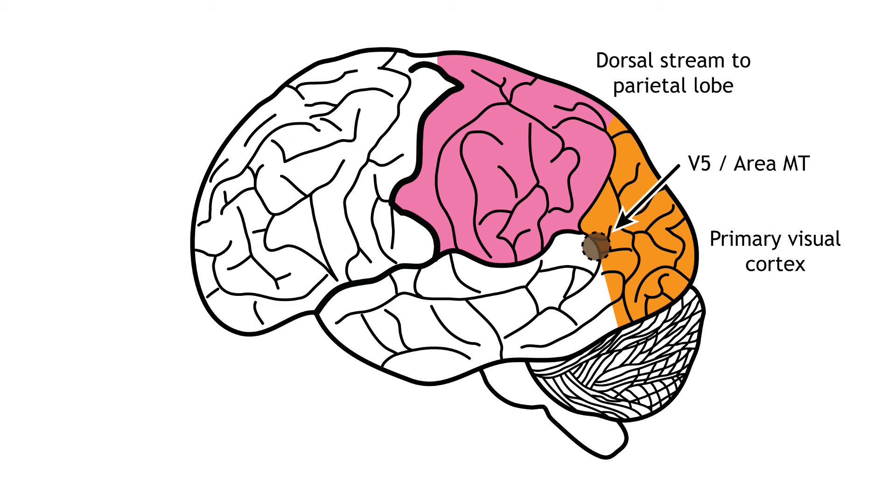As information continues to be processed through the dorsal stream, the neurons become selective for more complex motions. The dorsal stream is also important for processing our actions in response to visual stimulation, for example, reaching for an object in the visual field, or navigating around objects while walking.